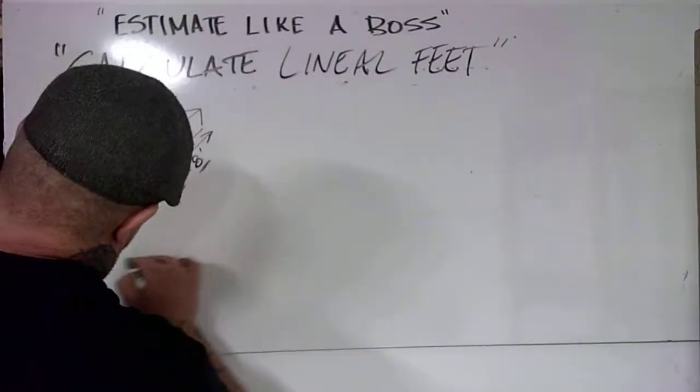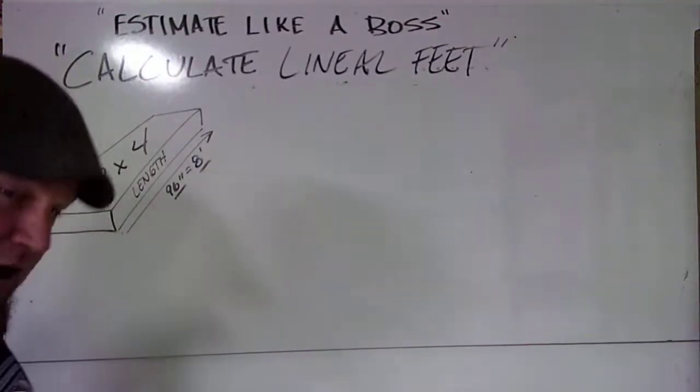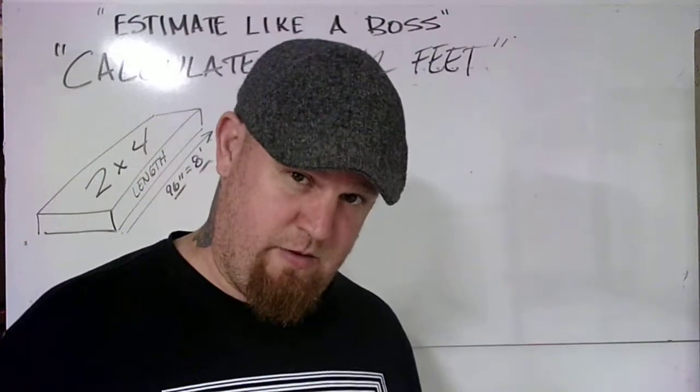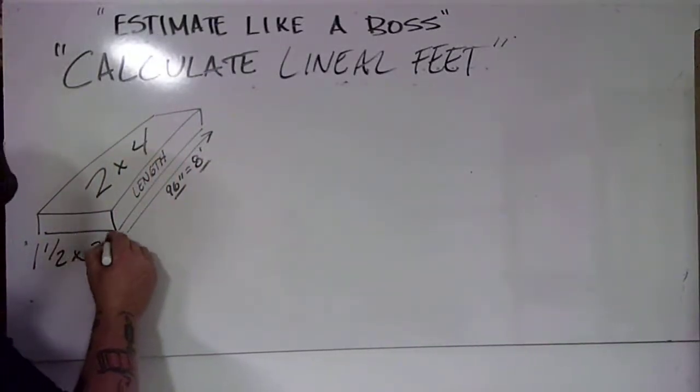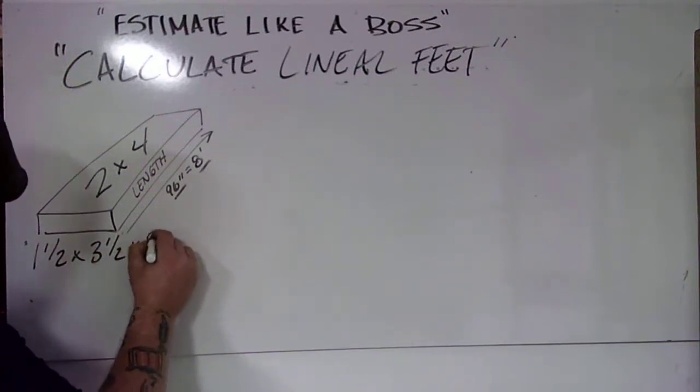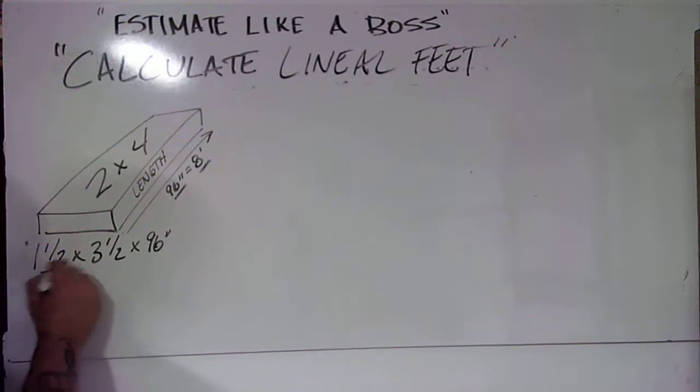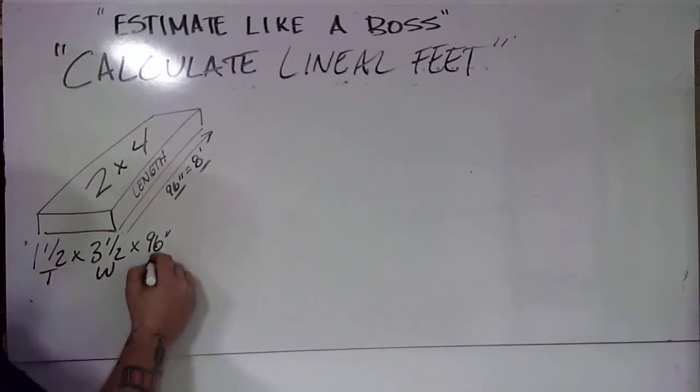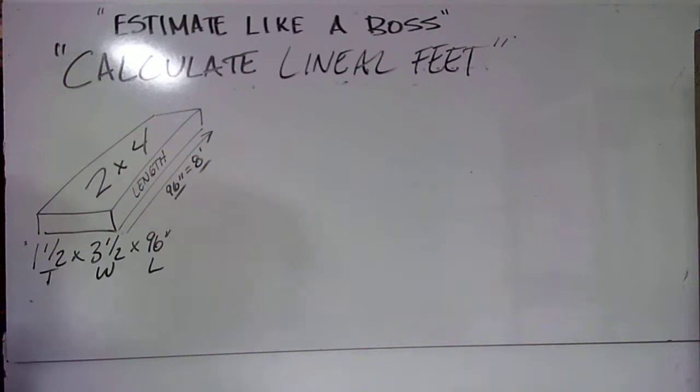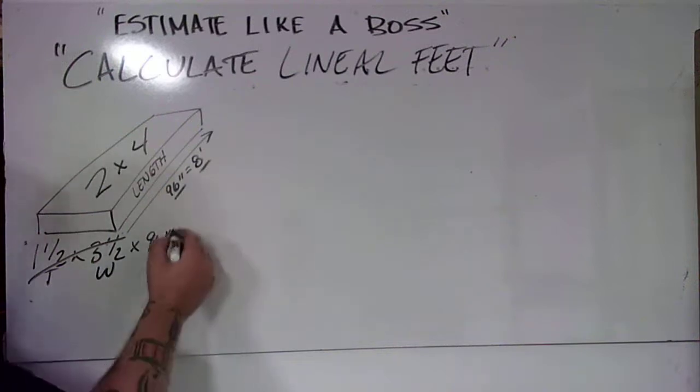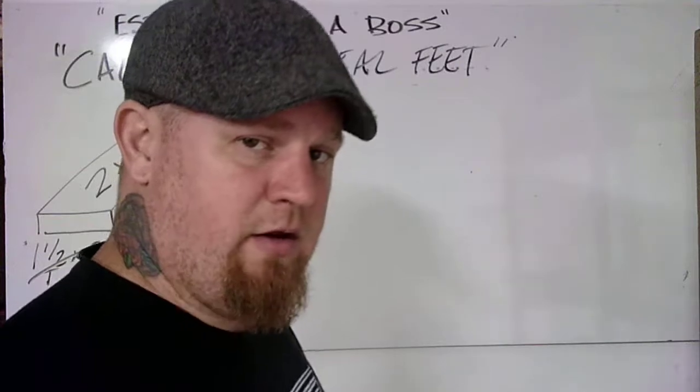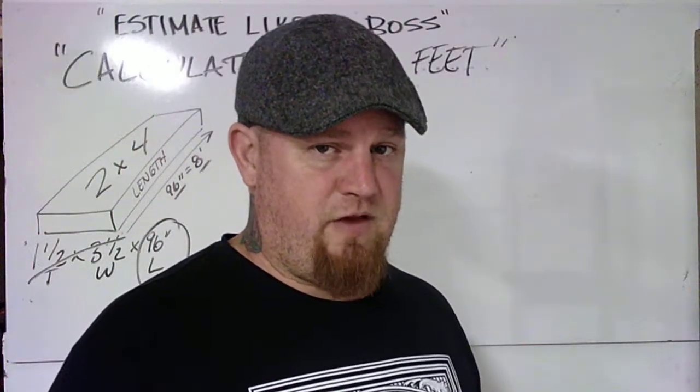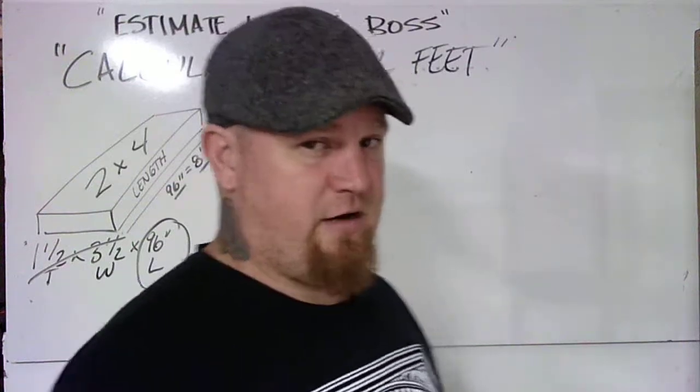If we go to Home Depot or the back bay of our shop and grab one 2x4, it measures 1.5 x 3.5 x 96 inches. This is the thickness, this is the width, and this is the length. When calculating lineal feet of board needed, we ignore the thickness and the width and focus on the length. If you're holding an 8-foot 2x4 in your hand, you have 8 linear feet of 2x4.